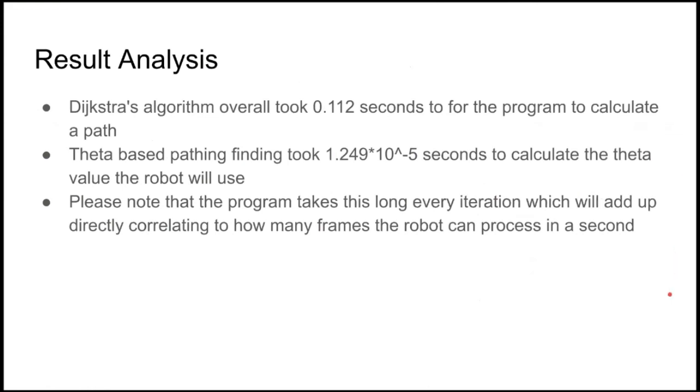Some of the results that we have gotten while we were comparing the Dijkstra algorithm and theta-based pathfinding, we found that the Dijkstra algorithm overall took 0.112 seconds for the program to calculate a path. And this was over multiple iterations. So each iteration, it would take 0.112 seconds. Additionally, the theta-based pathfinding algorithm, however, took 1.249 times 10 to the negative fifth seconds to calculate the theta value the robot will use. Please note also, as I said this before, that every iteration, it takes this many seconds. So it adds up over time, which is why we wanted to keep it as low as possible.